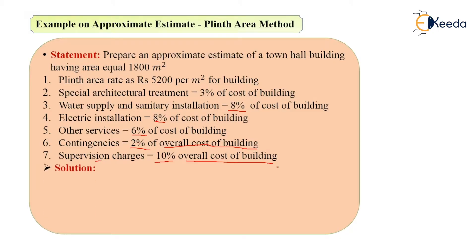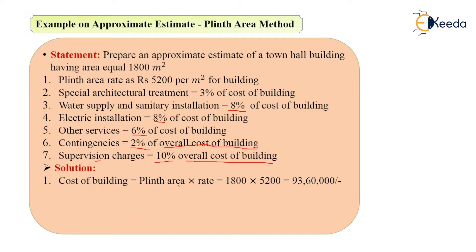Now let's see the solution. As the plinth area is given as 1800 meter square, I will multiply the plinth area by its rate. Plinth area is 1800 and the plinth area rate is 5200 per meter square for the building. So by multiplication of 1800 into 5200, it comes as 93,60,000 rupees.